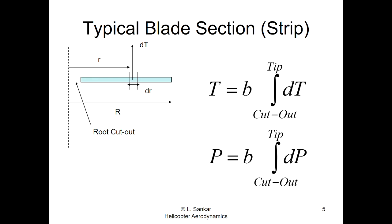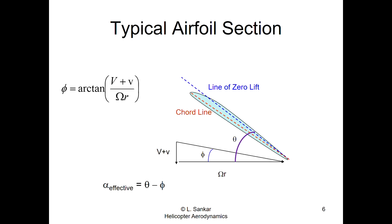This strip theory has been used for fixed-wing aircraft and propellers; now we apply it to helicopters. A typical section at radial distance r from the shaft axis is spinning at angular velocity Ω, so this section moves into the plane of the paper at velocity Ωr — the in-plane velocity. The airfoil is defined by a chord line joining the leading edge and trailing edge.